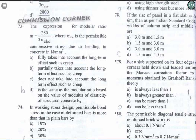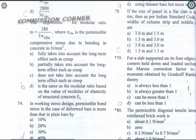Question 78: If the size of a panel slab in a flat slab is 6 m × 6 m, then as per IS (Indian Standard) code, the width of the column strip and middle strip are 3 m and 3 m respectively. Option C is the correct answer. When the flat slab panel size is 6×6, the column strip and middle strip are each half of the panel dimension — three meters each.